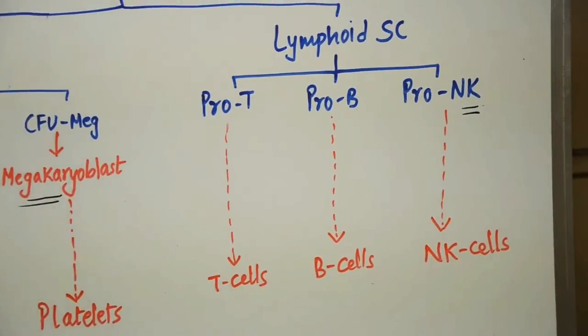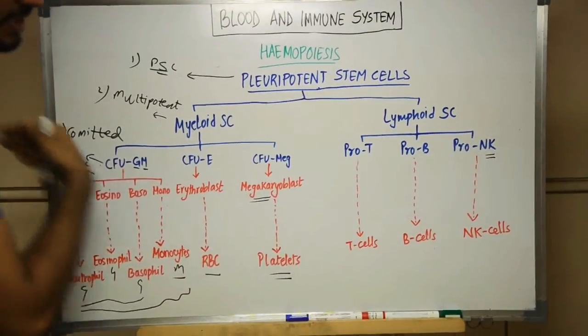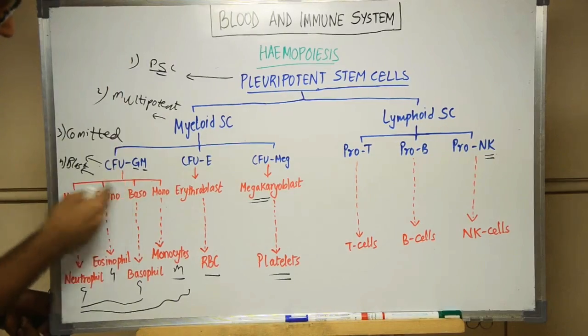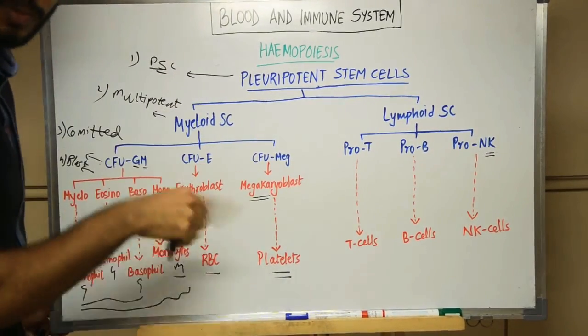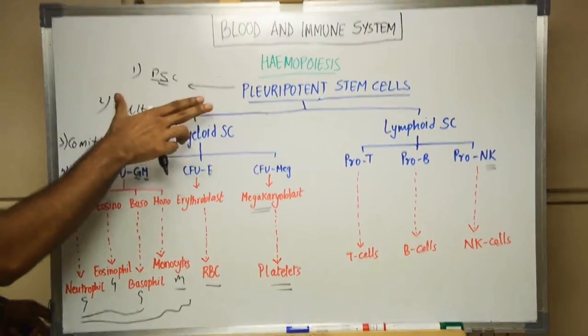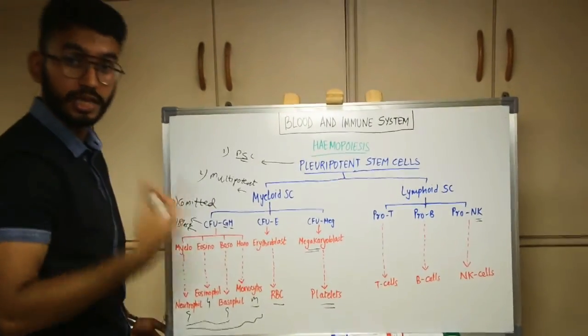This is the entire chart representing the various steps of hemopoiesis. The detailed steps of each cell will be covered in their respective videos. That's all about hemopoiesis and that's it from this video. Go back to your books and read it — it'll definitely make sense and be easier. See you in the next one.